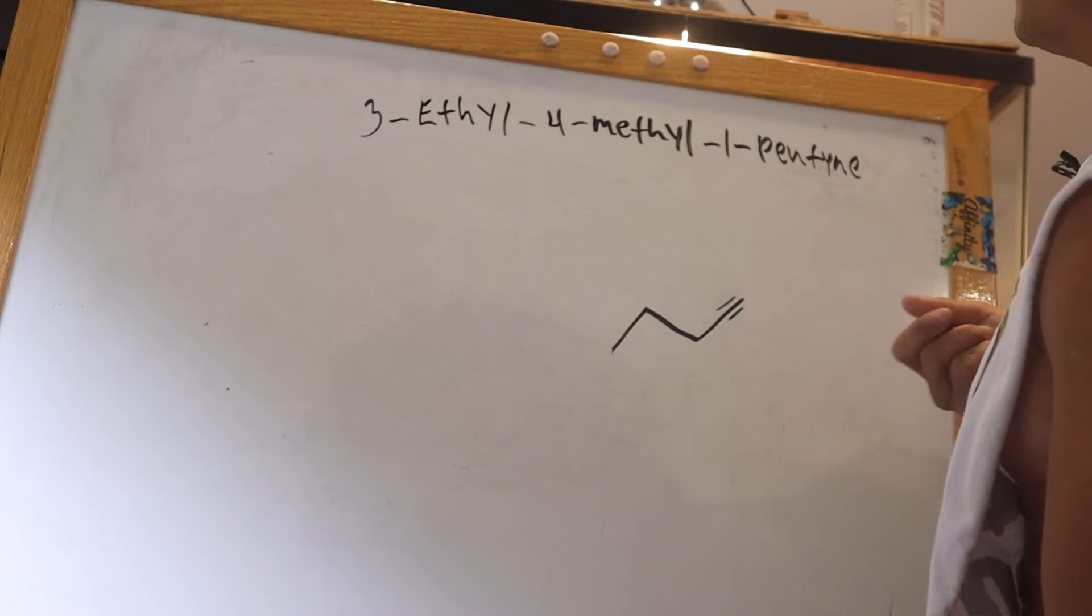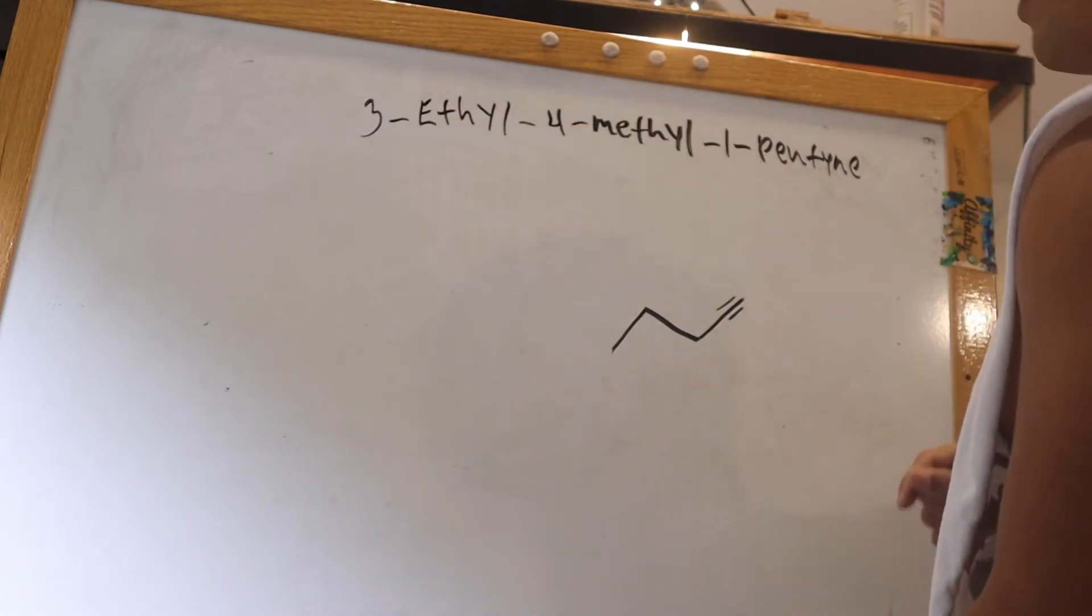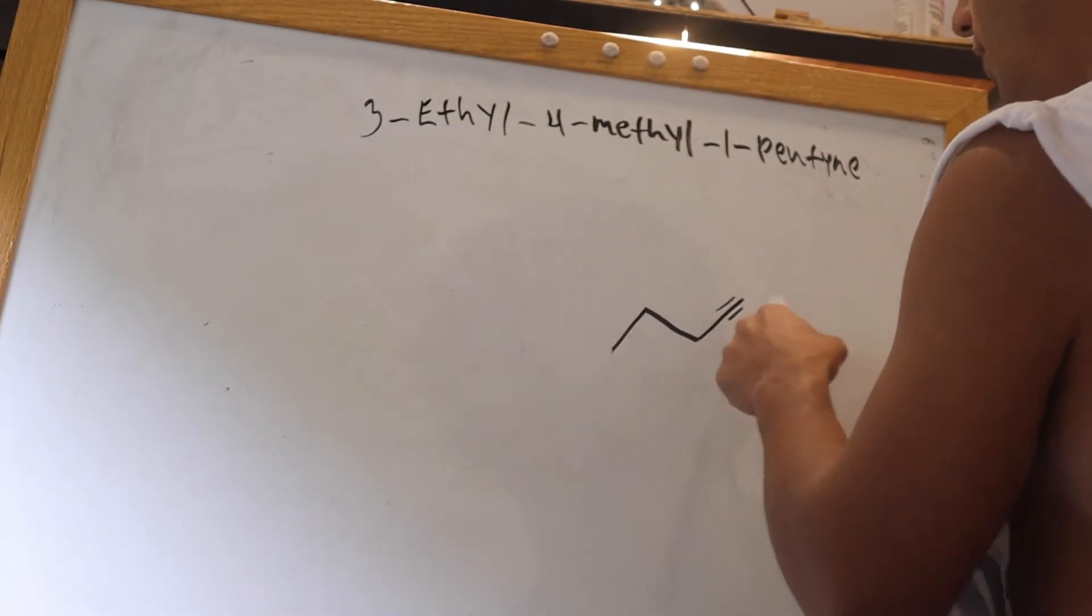So now, we know that there is, on carbon three, an ethyl group. So one, two, three. Carbon three.